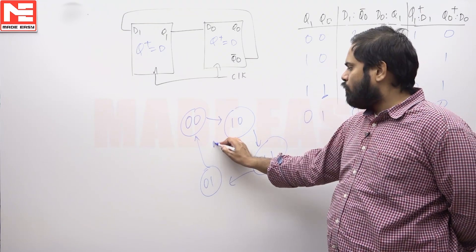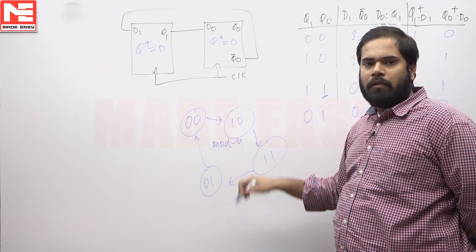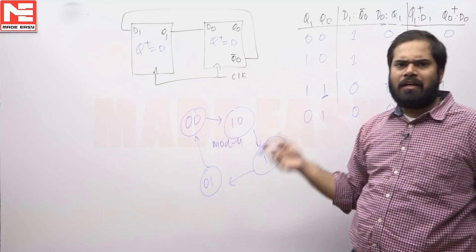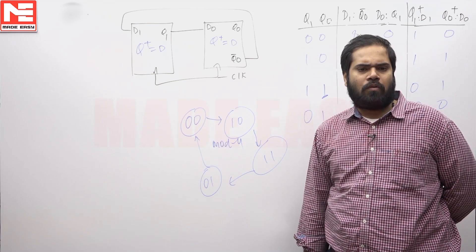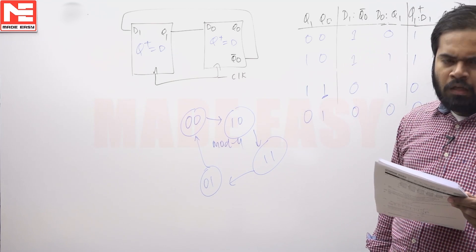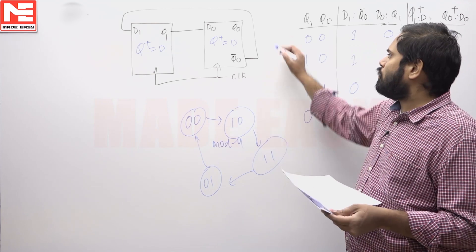So this is nothing but simple mod 4 counter. It is a simple mod 4 counter. That is the answer to this question. If you have the next, if you have the D input, next state obviously follows. There is nothing so difficult about it. So the answer to this question is 4. It is a numerical question, so answer is 4 to this question.